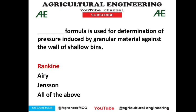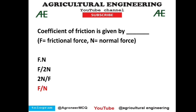The Rankine formula is used for determination of pressure induced by granular material against the wall of shallow bins — option 1 is correct. The coefficient of friction is the ratio of frictional force F to normal force N — option 4 is correct.